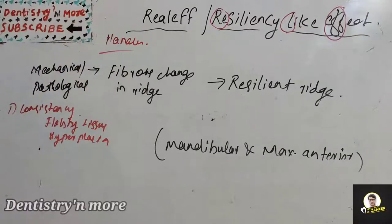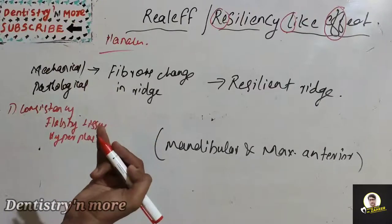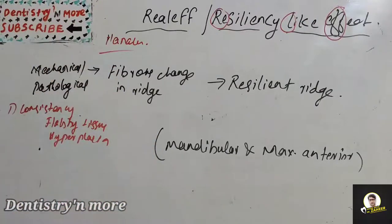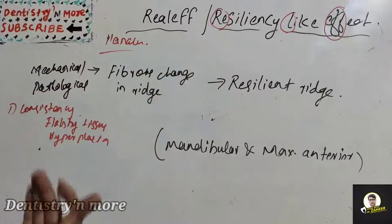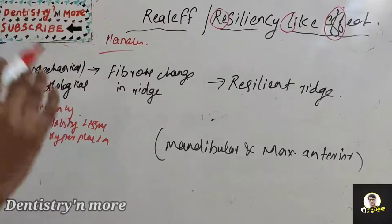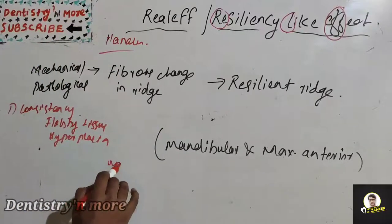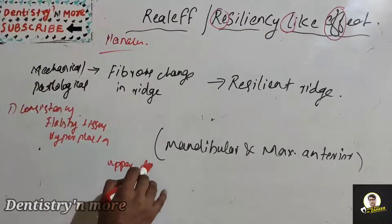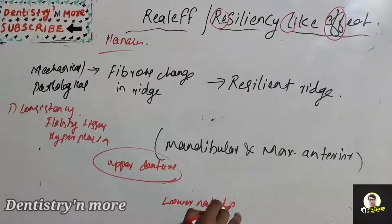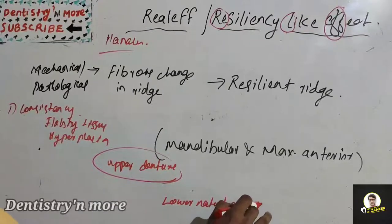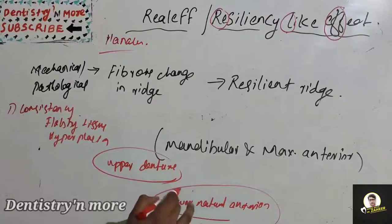When the maxilla has a complete denture and the mandible has natural teeth only at the anterior portion, the continuous trauma by the natural anterior tooth to the ridge through the denture will cause a resilient ridge at the maxillary anterior region. This is upper denture with lower natural anterior tooth.